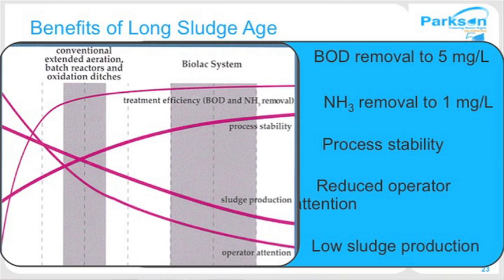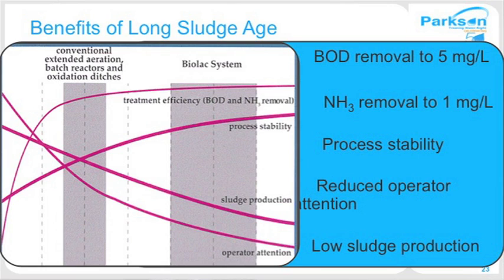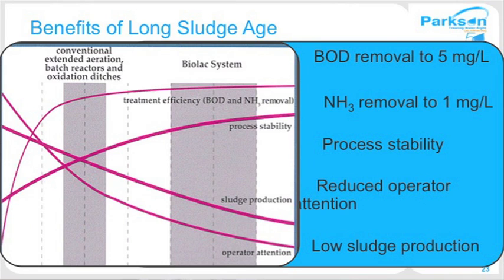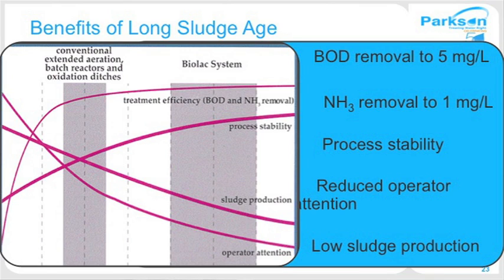The benefits of the BioLac process design stem from its long sludge age of 30 to 70 days compared to conventional systems at 15 to 30 days. With extended sludge age, you get minimized sludge production, reducing the cost to further treat and stabilize sludge. The process is much more stable and consistent in effluent quality even in cold climates, and requires minimum operator attention. A lot of BioLac installations are in small municipalities where the operator has other duties — so it's really a peace-of-mind, simple operation.